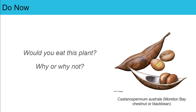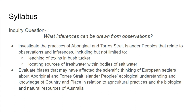Having a look at your answer, I would recommend not eating this plant. This Morton Bay chestnut, or black bean, is actually poisonous. Aboriginal and Torres Strait Islander people have used observations and inferences for thousands of years, and this is one of the examples we'll look at today. We're going to look at the leaching of toxins, how they make sure toxins are removed from their bush tucker, and how they would locate sources of fresh water within saltwater bodies. We'll also look at the biases that existed among European settlers regarding Aboriginal and Torres Strait Islander people's understanding based on their connection to country.